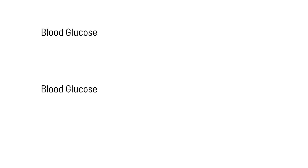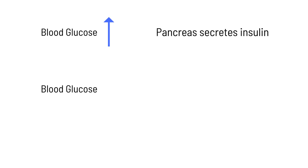Here are some human body examples. Blood glucose levels are held within a normal range. If glucose goes up, which is the stimulus, the pancreas responds by secreting insulin, which brings glucose back down. The stimulus and response are opposite, so this is negative feedback.